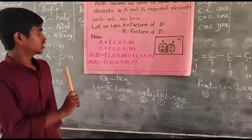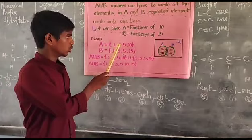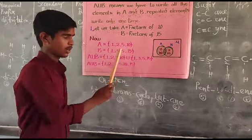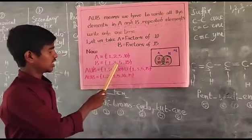Now set A is equal to factors of 10: 1, 2, 5, 10. And set B is equal to 1, 3, 5, 15.